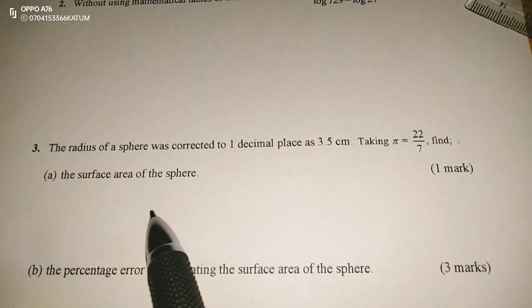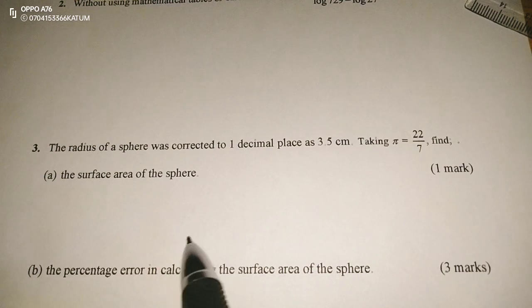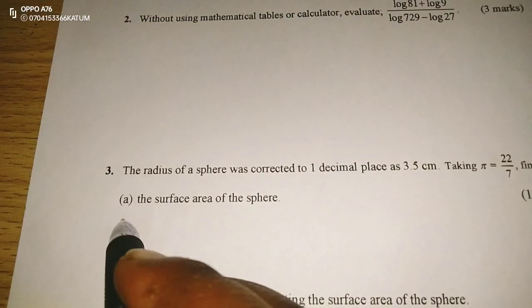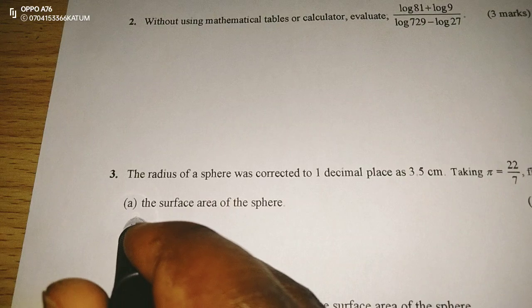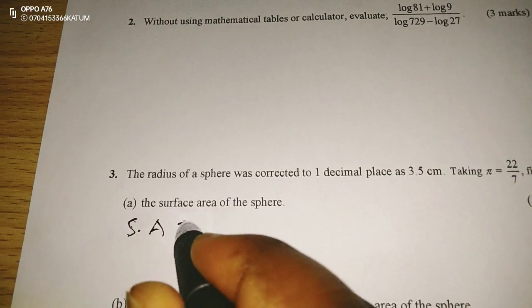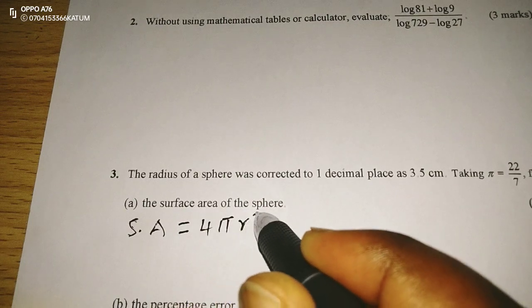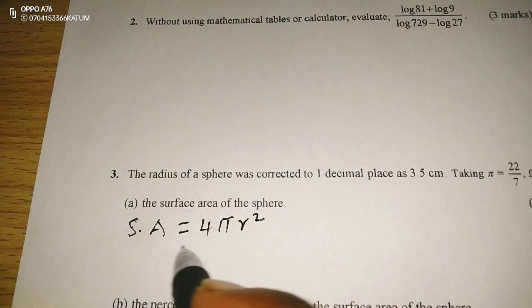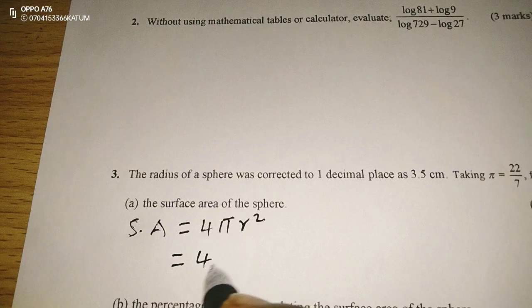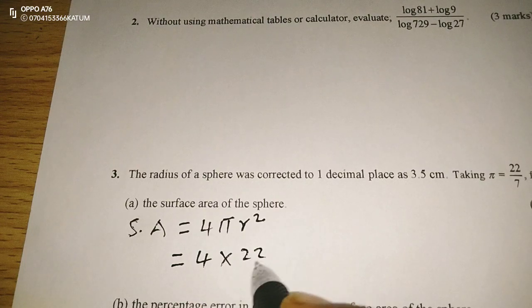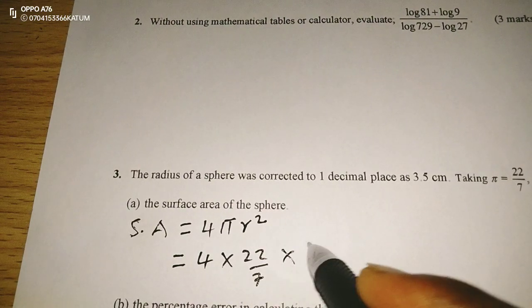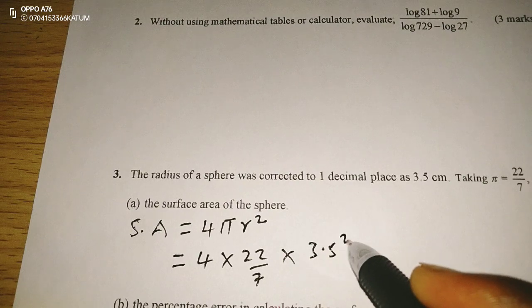Find part A, the surface area of the sphere. We should know that surface area of the sphere is usually given by 4 pi r squared, where r is the radius of the circle. So 4 times pi of 22 out of 7 times radius of 3.5 squared.